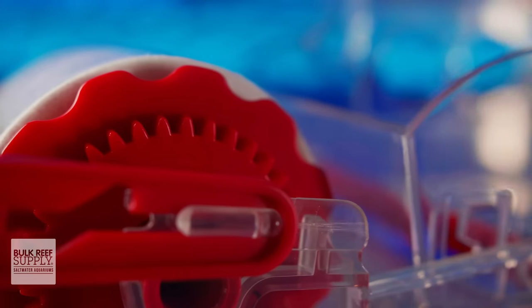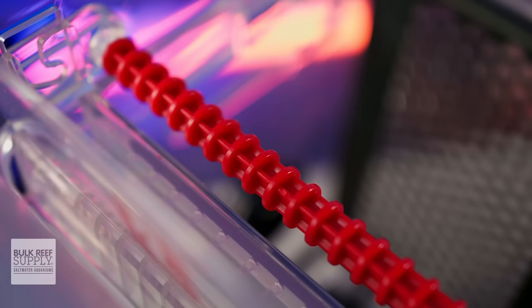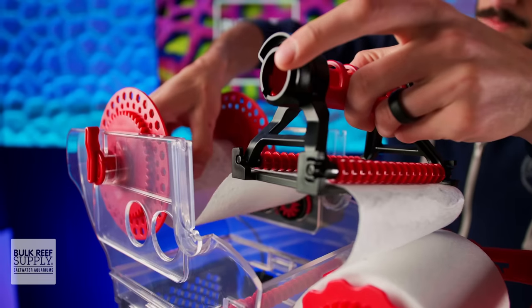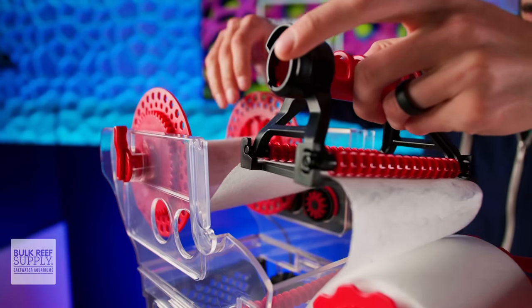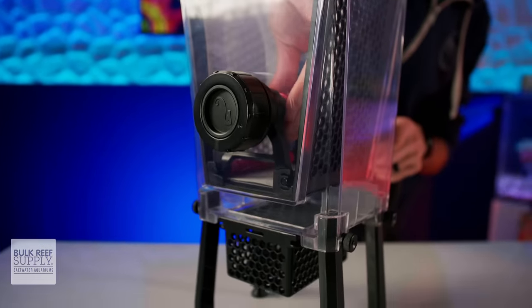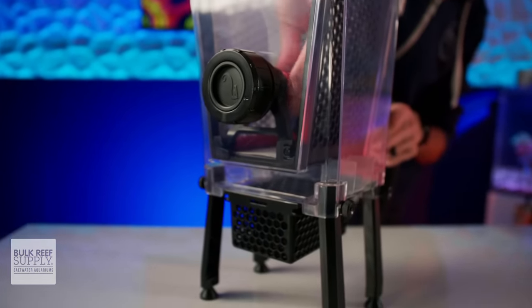It uses an ingenious loading system that allows you to easily swap fleece rolls without having to remove the unit from the sump or turning off the return pump, and without having to feed the fleece past a barrage of rollers with barely any clearance under the stand. It's actually that easy.